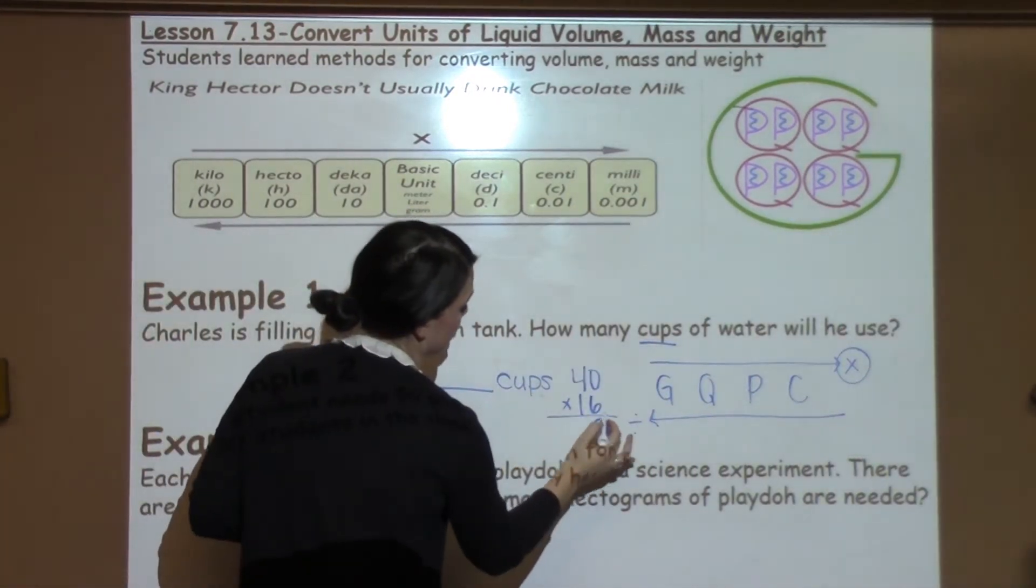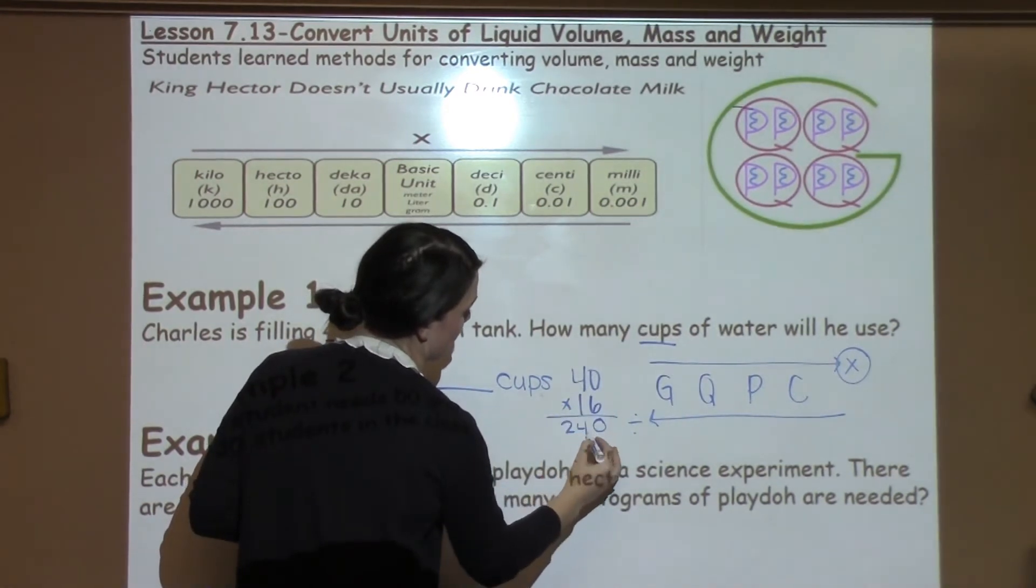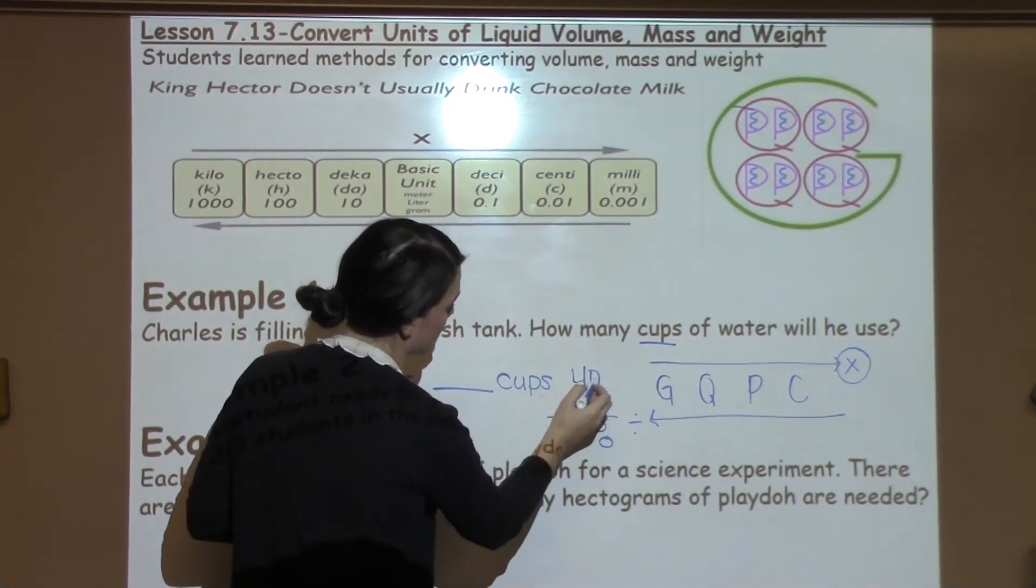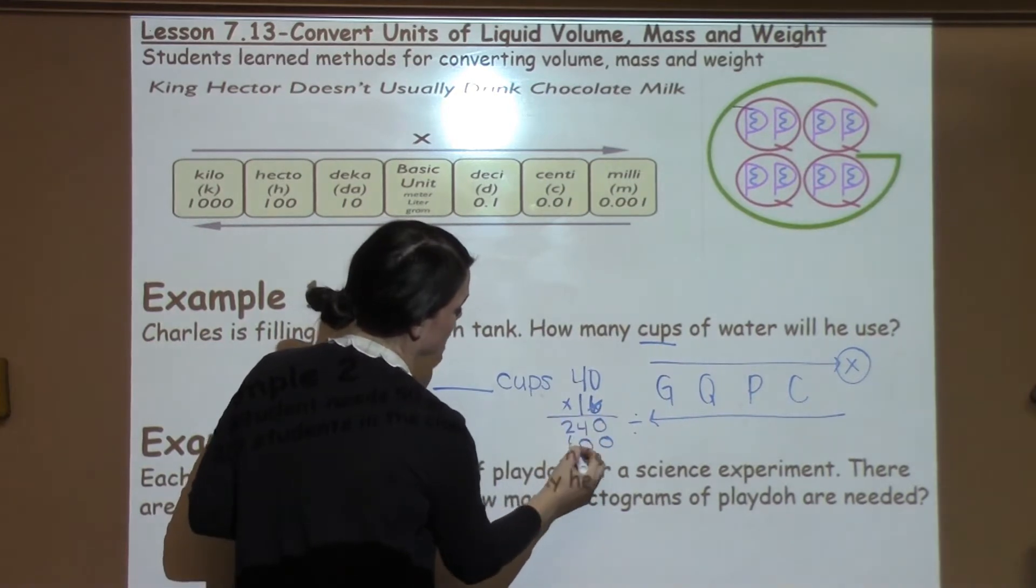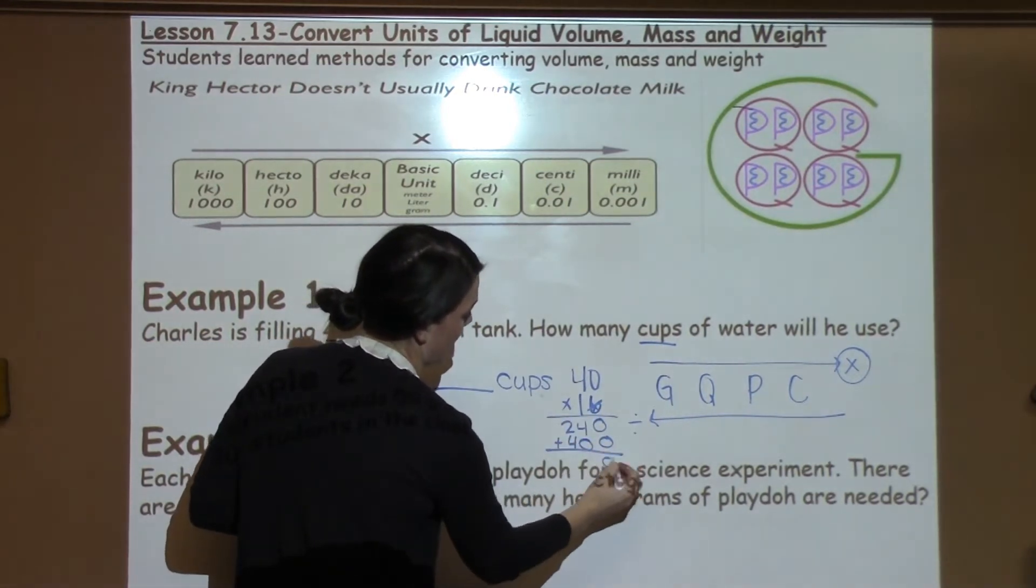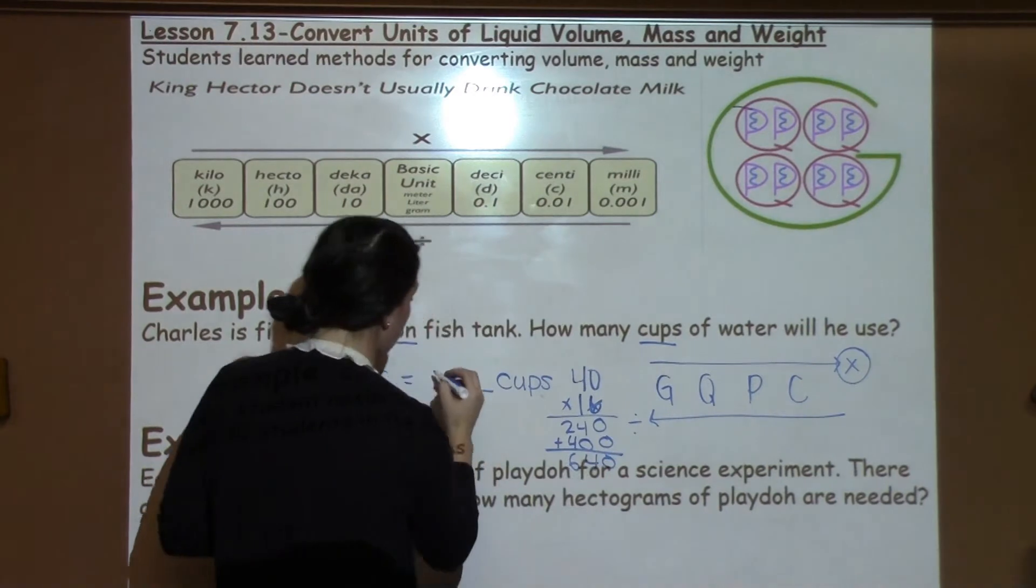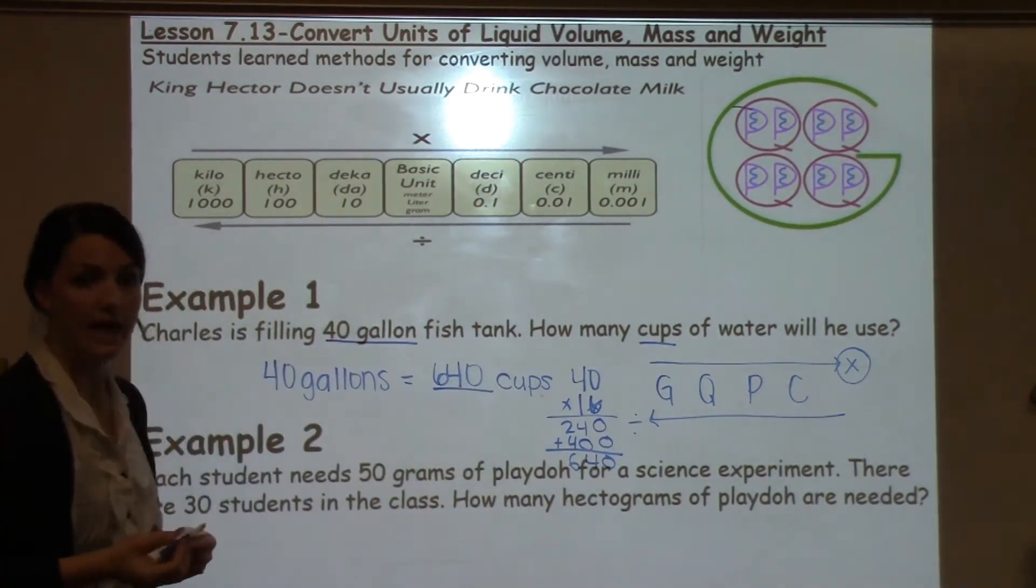So now all I have to do is multiply 40 times 16. 6 times 0 is 0. 6 times 4 is 24. I'm done with my 6 so I include a placeholder. 1 times 0 is 0. 1 times 4 is 4.